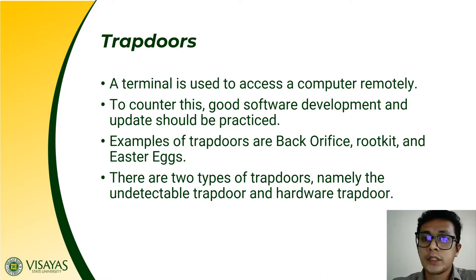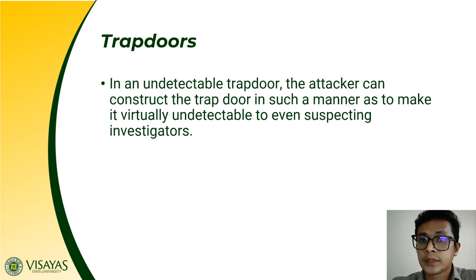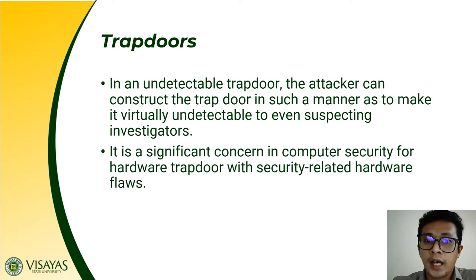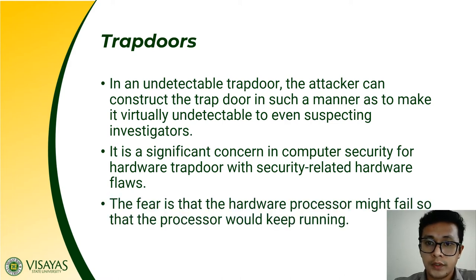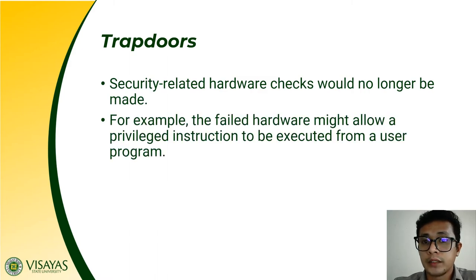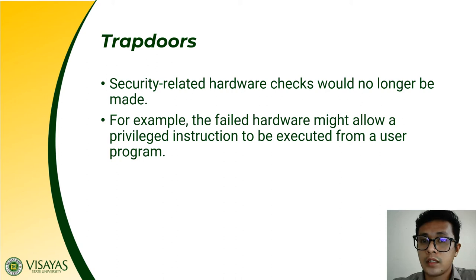There are two types of trapdoors: the undetectable trapdoor and a hardware trapdoor. In an undetectable trapdoor, the attacker can construct the trapdoor in such a manner as to make it virtually undetectable, even to suspecting investigators. For the hardware trapdoor, the concern is security-related hardware flaws. The fear is that a hardware processor might fail so that the processor would keep running, but security-related hardware checks would no longer be made because the hardware is already destroyed or damaged.